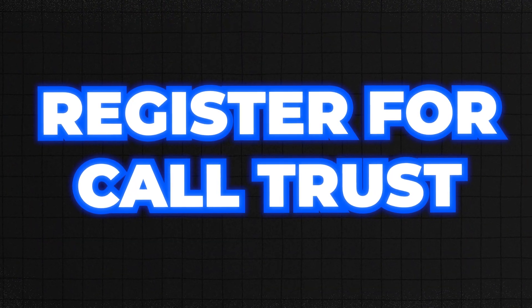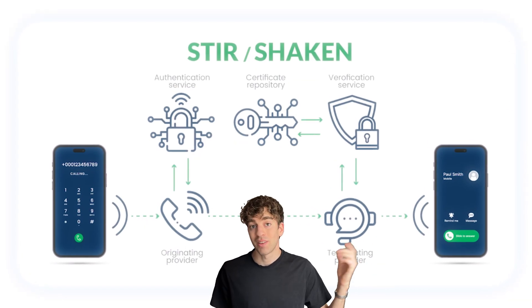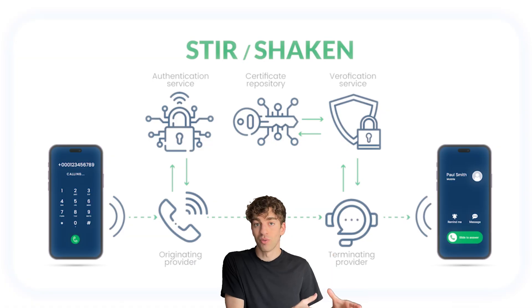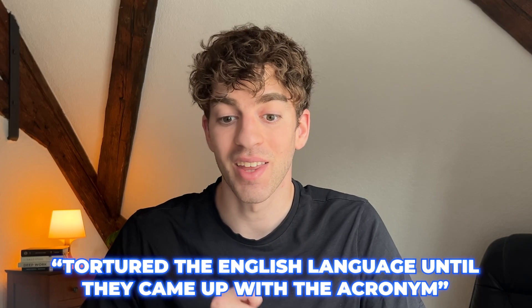So how do we register for call trust? SHAKEN/STIR is another major step in protecting your number's reputation. It's a free system that authenticates your number to carriers so they know you're a real business and not a spoof call — think of it like getting a verified badge for voice calls. Fun fact: the name SHAKEN/STIR was inspired by James Bond, who famously prefers his martinis shaken, not stirred.